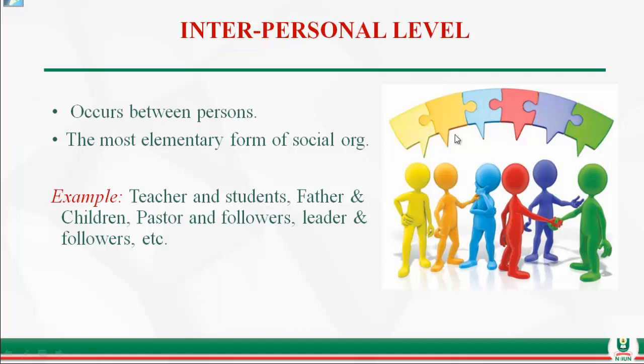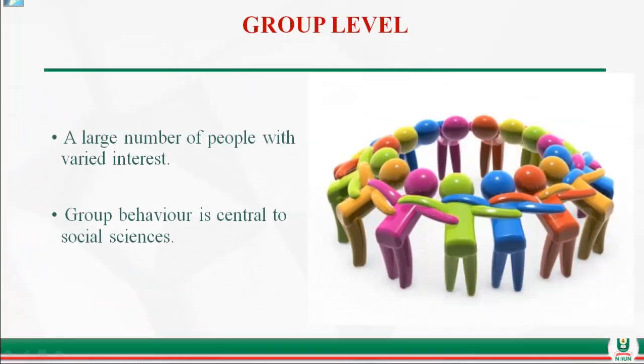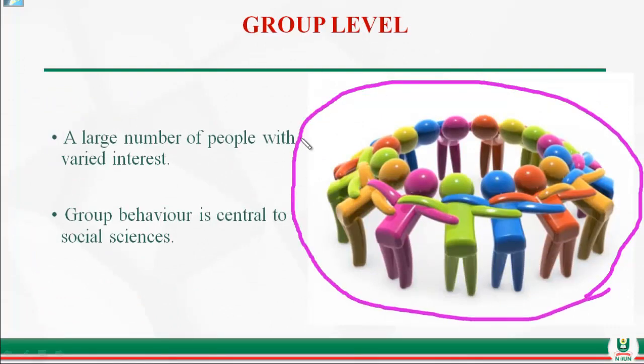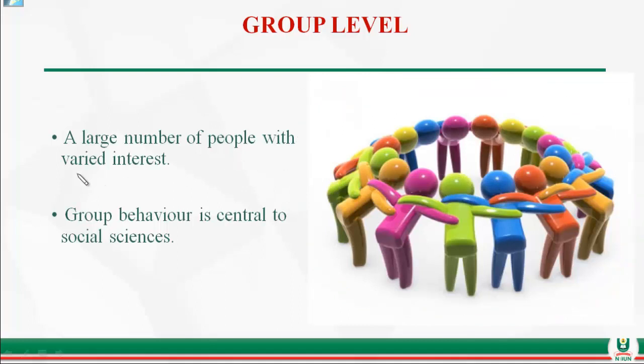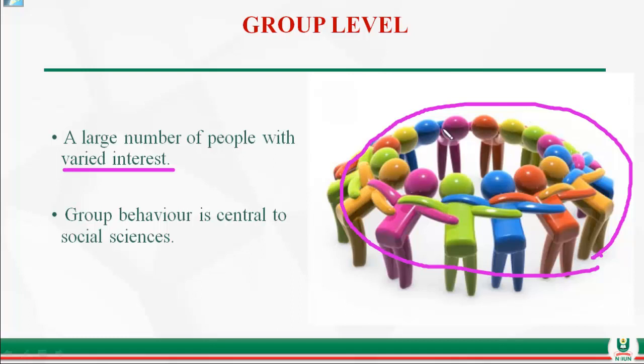The group level of social organization involves a large number of people bound together and interacting together. Even though they are in a group, members have varied interests. This is the second level of interaction in social organization, distinguished from the interpersonal level by involving multiple individuals with different goals.